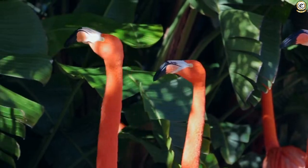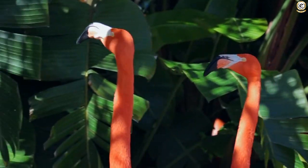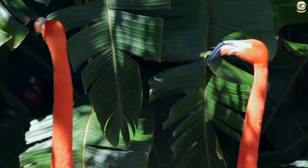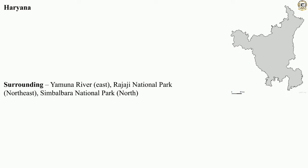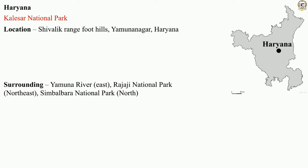Welcome to the next part of National Parks. In this video we will cover some more national parks. Kalesa National Park, surrounded by the Yamuna River in the east, the Rajaji National Park in the northeast, and the Simbalbara National Park in the north, is located at the Shivalik range foothills in Yamuna Nagar, Haryana.